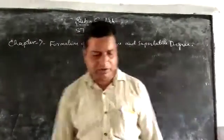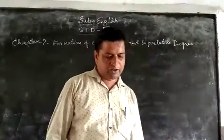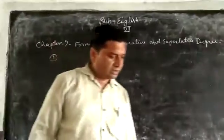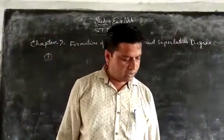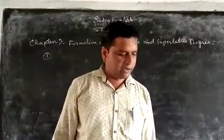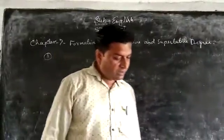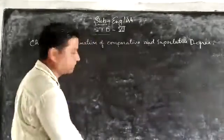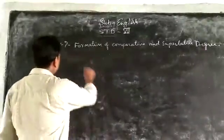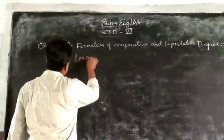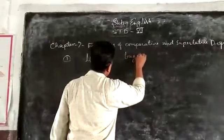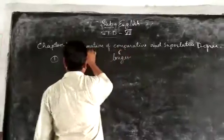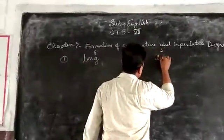Comparative and superlatives are formed by adding ER and EST to the positive form of monosyllabic words. For example, 'long' becomes 'longer' in comparative and 'longest' in superlative.